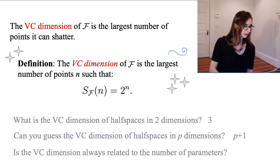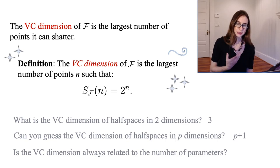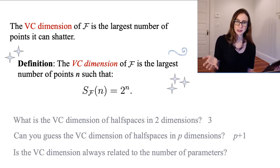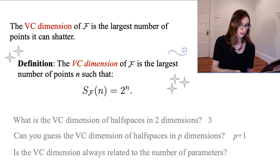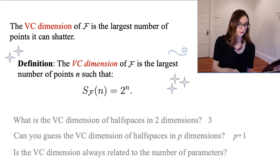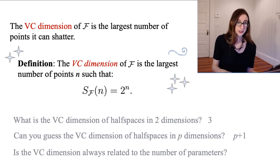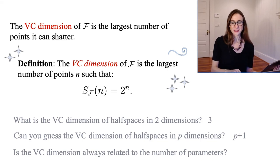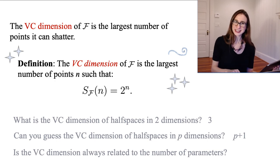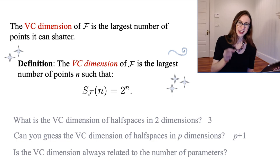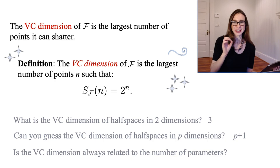It seems like the VC dimension might just be related to the number of parameters. The VC dimension is supposed to measure the complexity of a class of functions — does it just measure the number of parameters? For hyperplanes, lines in a plane have three parameters: the x coefficient, the y coefficient, and the intercept. Half spaces have P+1 parameters, and for polynomials the VC dimension is related to the degree, and for decision trees it's related to the number of leaves. But actually, the VC dimension is not always related to the number of parameters — in the next video I'll show an example of a one-parameter family of functions with infinite VC dimension.